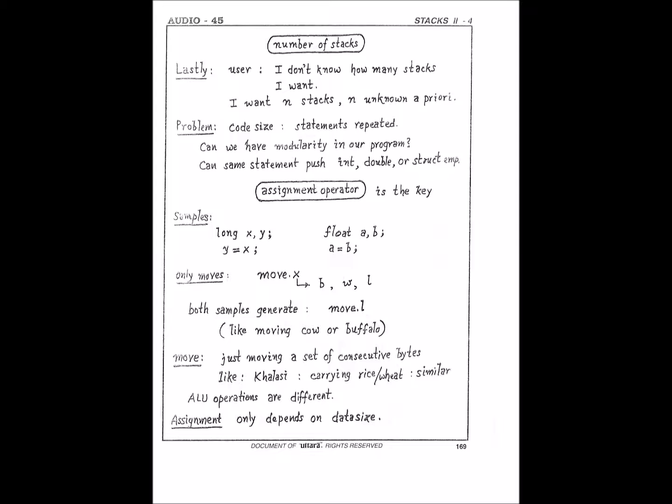You say, no, no, I will have dynamic array, even there is a problem. Dynamic array require a pointer, int star stack or double star stack. How many pointers are you going to have? Because you need one pointer for each of the stacks that you want to have at exact time. So now he says, I don't even know how many stacks that I want in the first place. Problem, no?